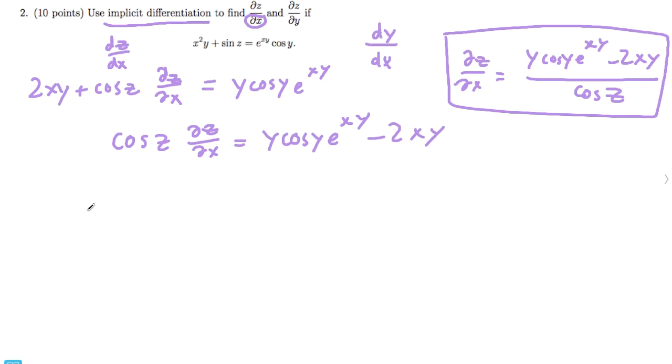And then we just do the same process for the partial with respect to y. So we take this derivative with respect to y. That would just be x squared plus cosine of z dz over dy equals x e to the xy cosine y plus e to the xy times negative sine y. So our dz over dy is on this side. So let's move this x squared to the other side.